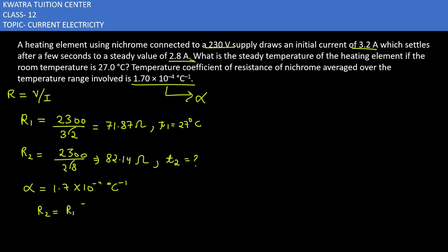R2 is equal to R1 times 1 plus alpha times T2 minus T1. We need to find T2. So R1 will be multiplied first, then we move R1, leaving T2 minus T1.